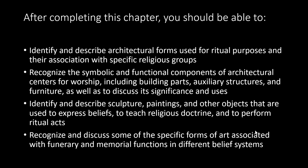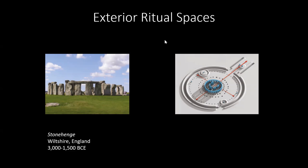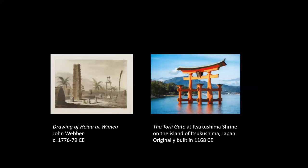Most of us are familiar with Stonehenge in England, a prime example of an exterior ritual space as there was no roof covering. We also have the Heiau at Waimea, a Hawaiian and Polynesian ritual structure — this did have an interior space and covered an altar area. And then there's also the Tori Gate in Japan, from the Shinto religion, one of Japan's two main religions along with Buddhism. The Tori Gate frames views and acts as a transition for the visitor or believer into a different sort of spiritual space by passing through it.